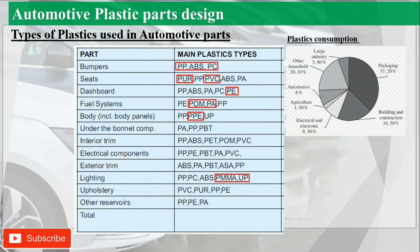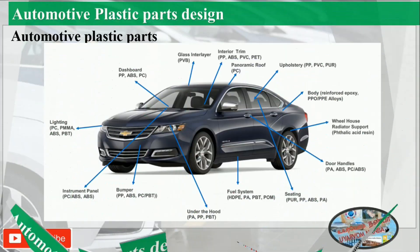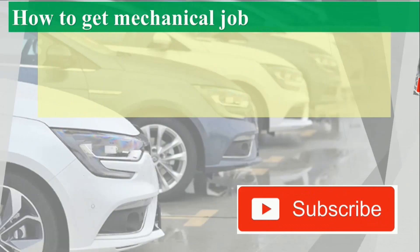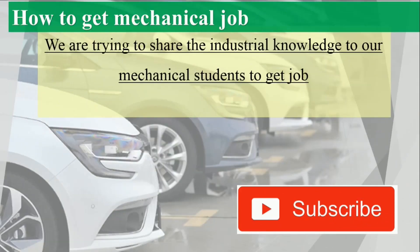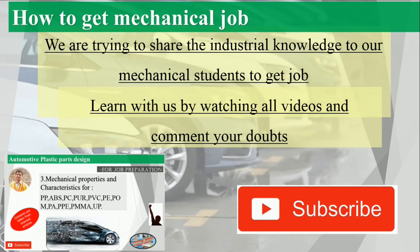This is the plastic consumption in different engineering fields. Automotive holds 8%. The picture below shows the percentage of plastics used in automotive. Another picture shows the vehicle parts and types of plastics used, along with mechanical properties and characteristics of different plastic materials, which will be covered in the next video.